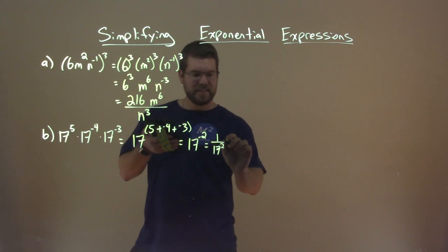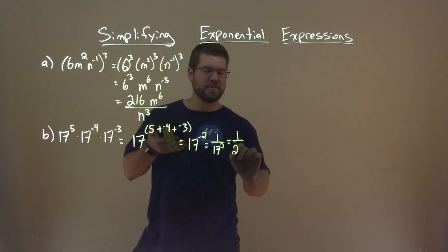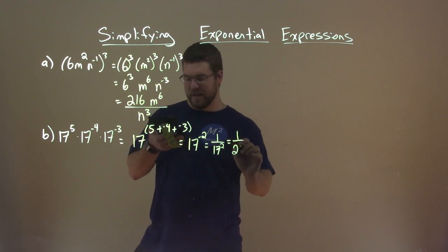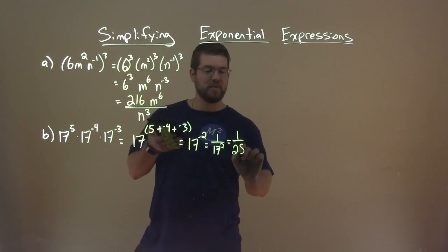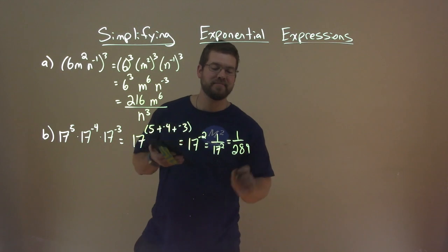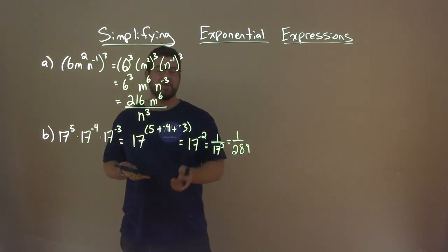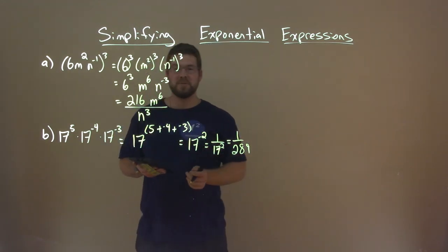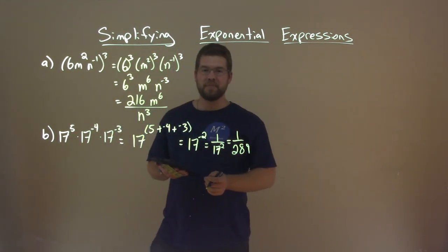And 17 squared is 289. So we have 1 over 289. And there we have it — 1 over 289.